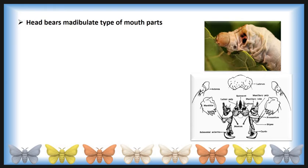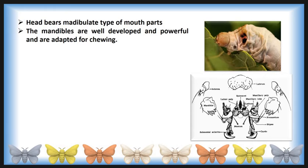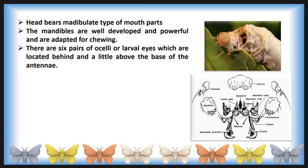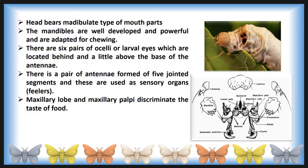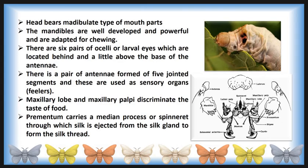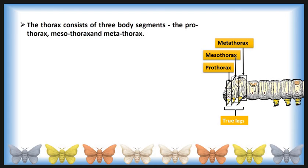The silkworm head bears mandibular type mouthparts. The mandibles are well developed and powerful, adapted for chewing. There are 6 pairs of ocelli (larval eyes) located behind and slightly above the base of the antennae. There is a pair of antennae formed of 5 jointed segments, used as sensory organs. Maxillary lobes and maxillary palps discriminate the taste of food. The prementum carries a median process or spinneret through which silk is ejected from the silk gland to form the silk thread.